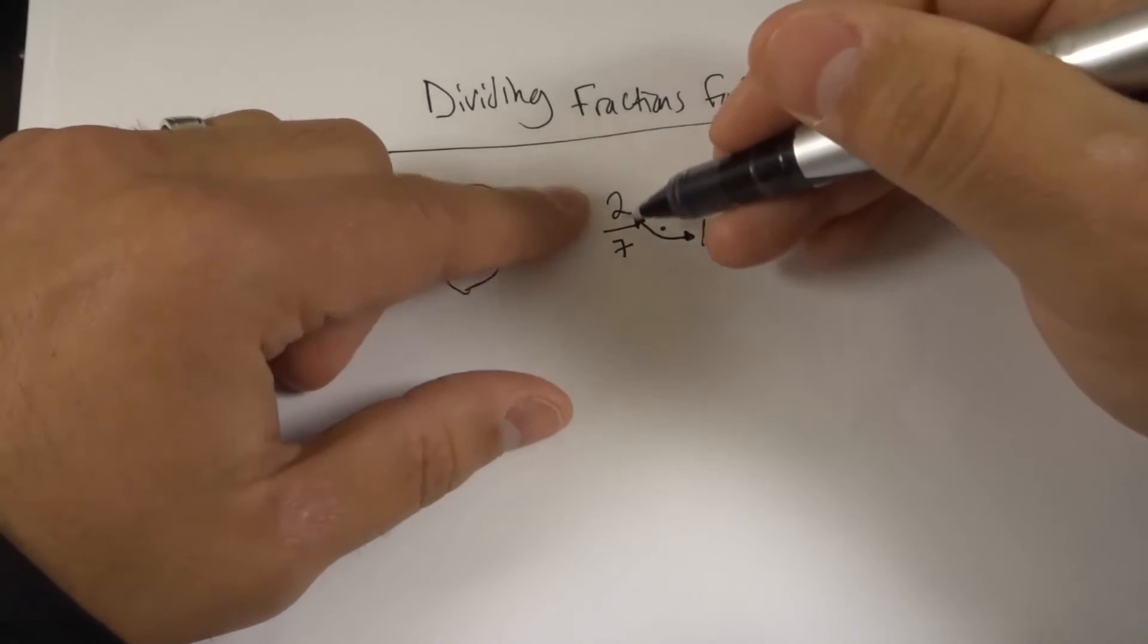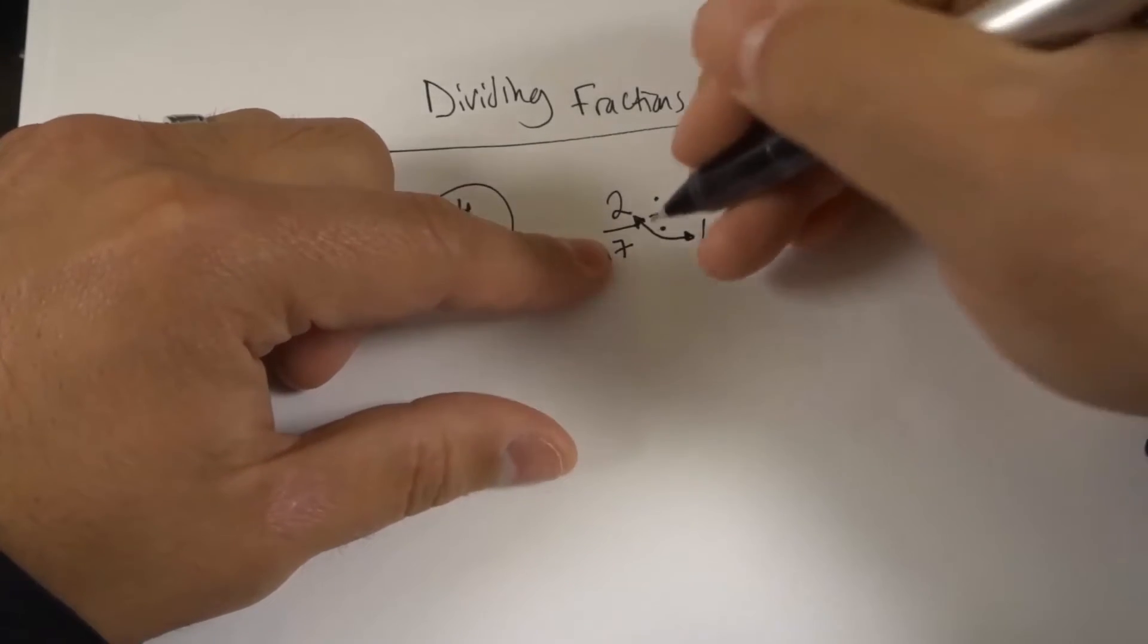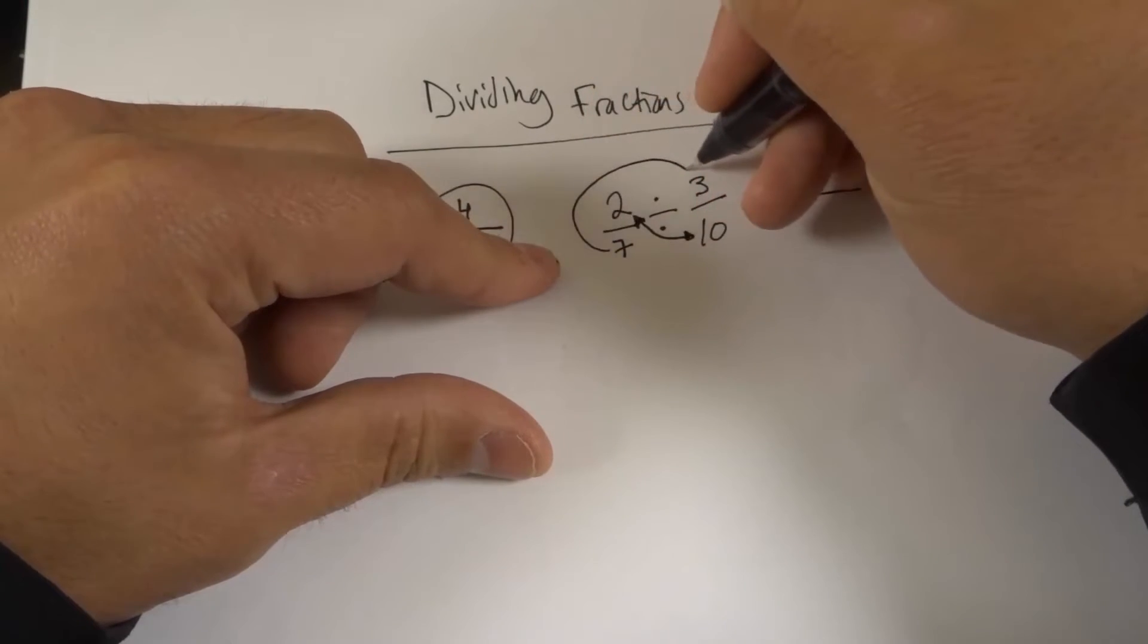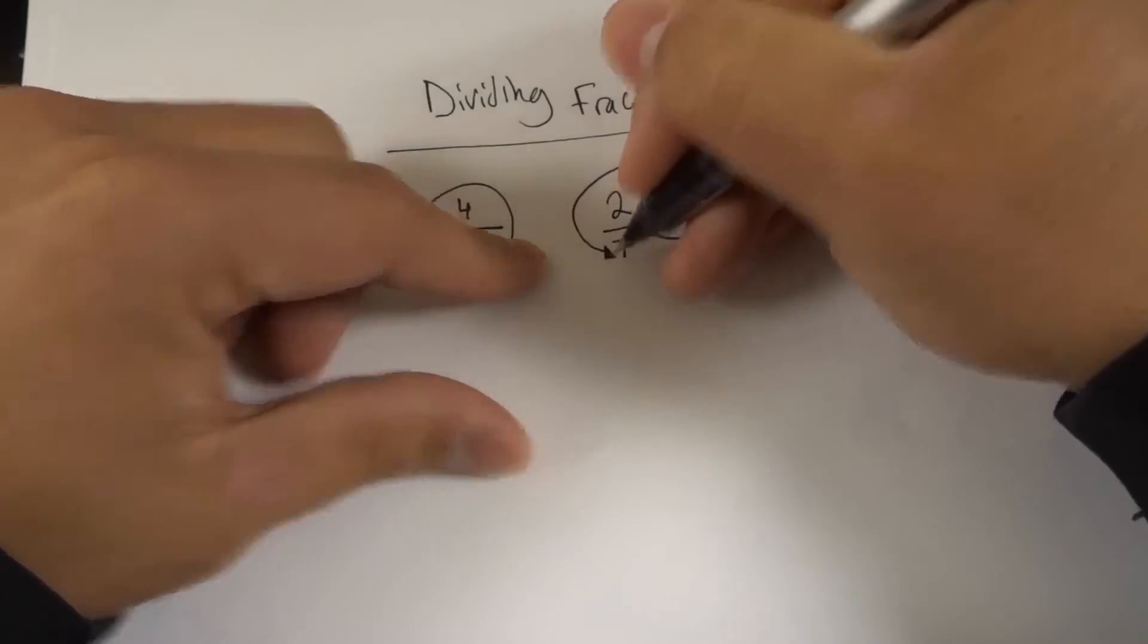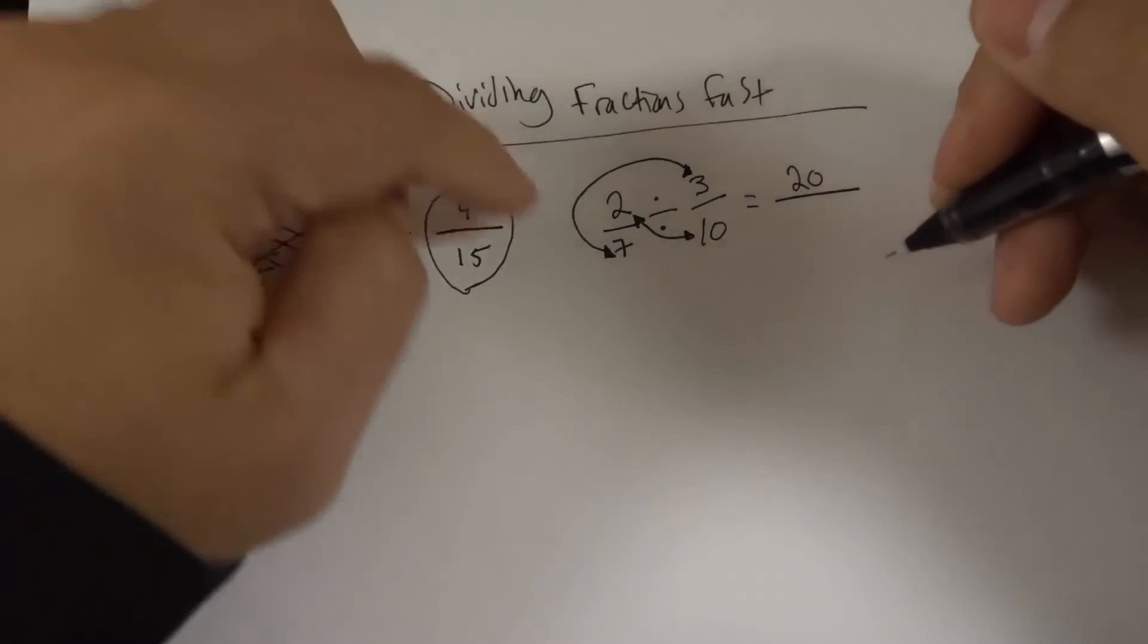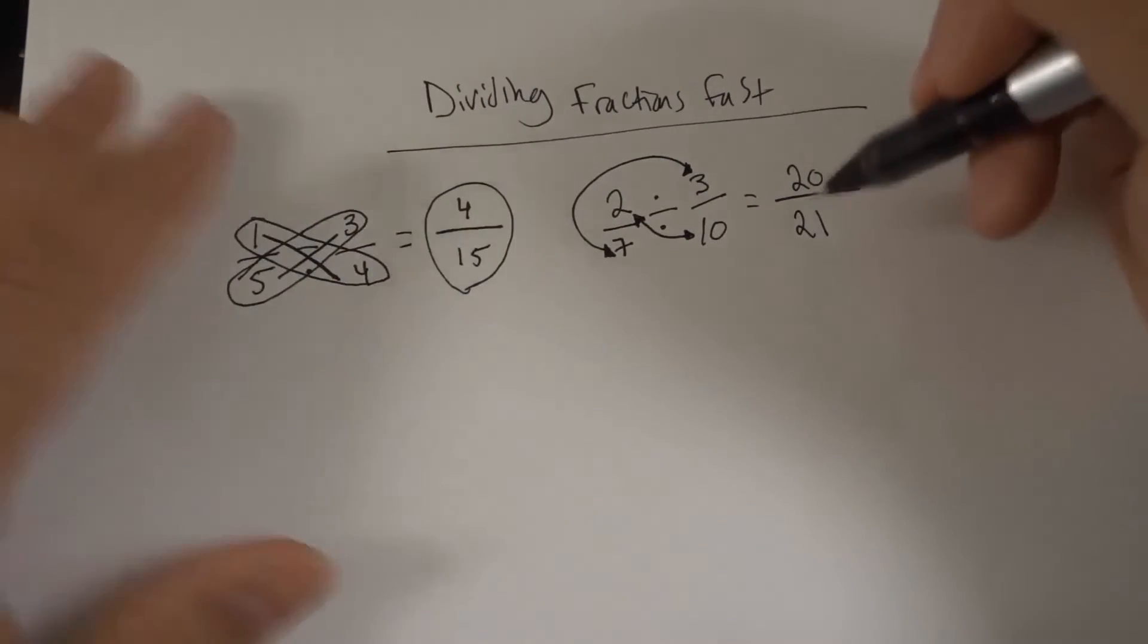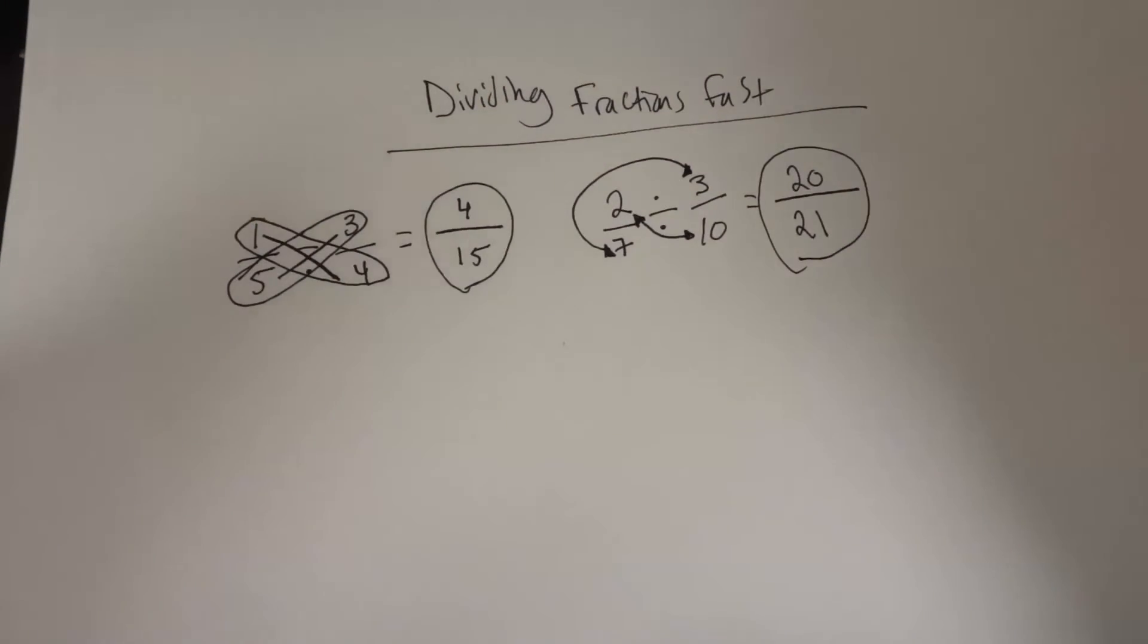Now we're going to take our bottom left and our top right and we're going to multiply those two numbers together. So 7 times 3. If I take 7 and 3 and I multiply them together, that is going to be our bottom number, which is 21. Check that out. There's your answer. 20 over 21.